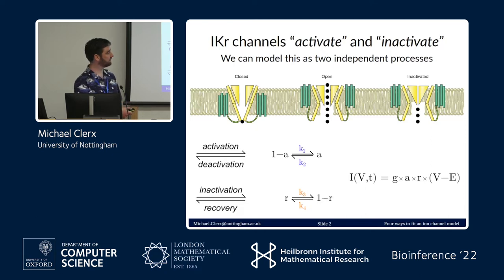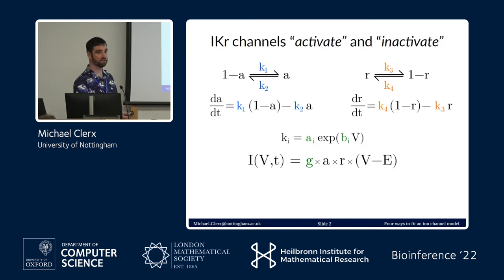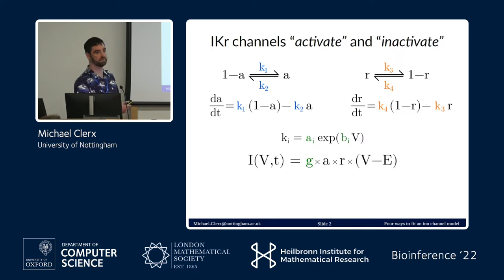We observe the current through the channels, which is the product of A times R, multiplied by the input minus some offset, times G — one of the model parameters. Based on this, you can write down simple ODEs. The model has two ordinary differential equations, each from a chemical scheme. The reaction rates have a voltage-independent part and a voltage-dependent part — those are our parameters. The model ultimately has four of these rates giving eight parameters: four A's, four B's, and one G — that's the ninth parameter.